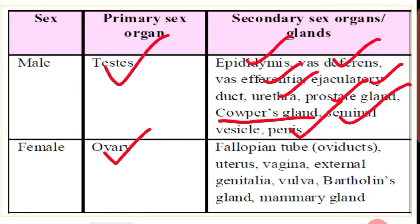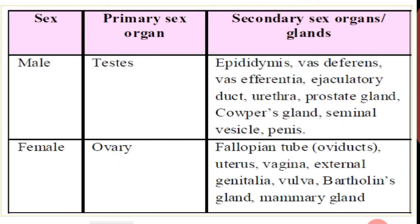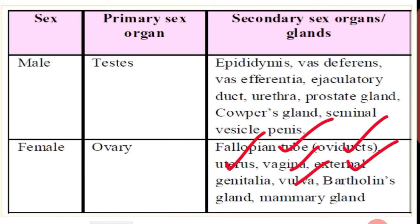The female secondary sex organs are: fallopian tube (otherwise named as oviduct), uterus, vagina, external genitalia, vulva, Bartholin's gland, and mammary gland. These are the female secondary sex organs.